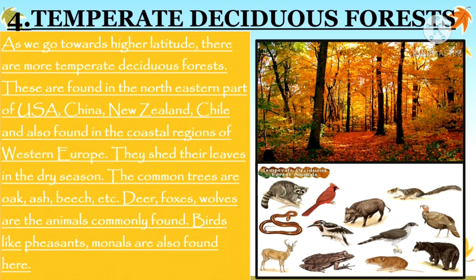Our next type is temperate deciduous forest. As we go towards higher latitudes, there are more temperate deciduous forests. These are found in the northeastern part of USA, China, New Zealand, Chile and also in the coastal regions of Western Europe. They shed their leaves in the dry season.